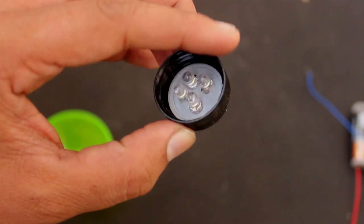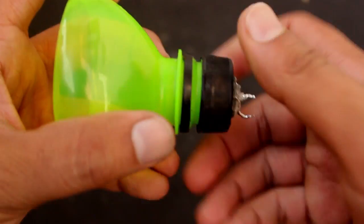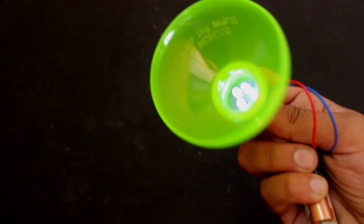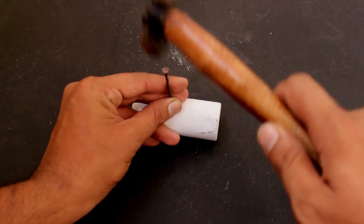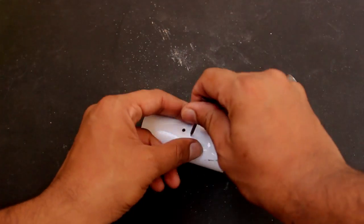Now fix the cap back to the bottle head and test whether the LEDs are working or not. Now take the metal can and make a hole to fit the switch.